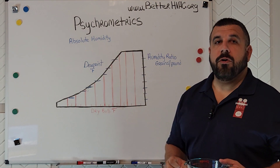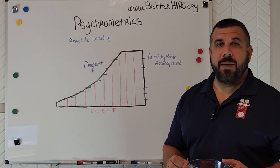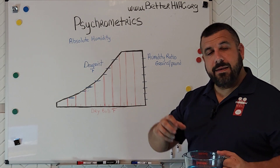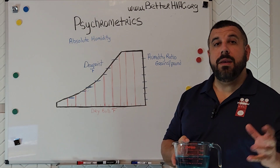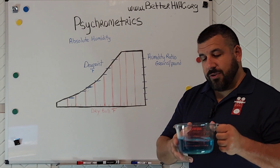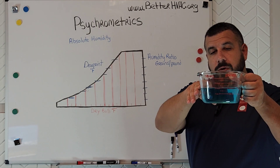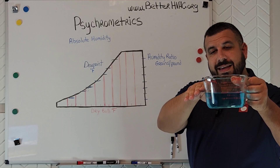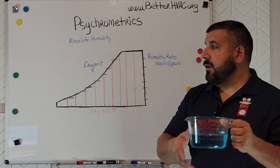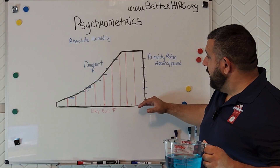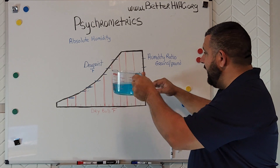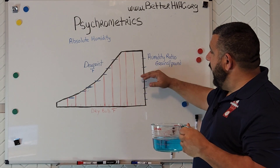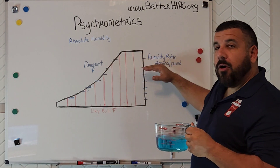Now we're going to be talking about moisture over the next few episodes, because air has moisture in it. That moisture has heat — it has other properties that we need to be aware of. Just like if there is more moisture in this container here, I'm going to see that in the higher level in the container. The same thing with the psychrometric chart: the more moisture we have in the air, the higher we're going to be on this chart.